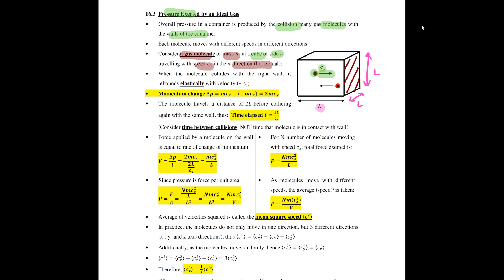After the collision, the molecule will rebound. Because the collision with the wall is elastic, the molecule rebounds with the same speed but in the opposite direction — so the velocity is Cx in the opposite direction. The momentum change of this gas molecule is mCx minus negative mCx, giving you 2mCx, taking rightward as positive.